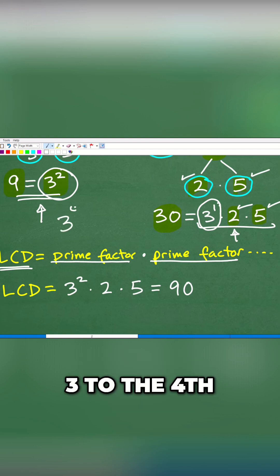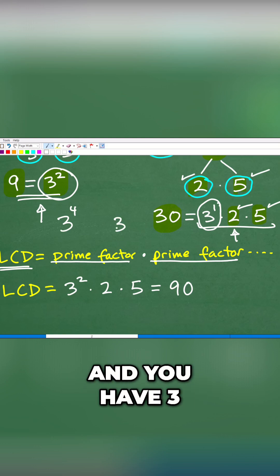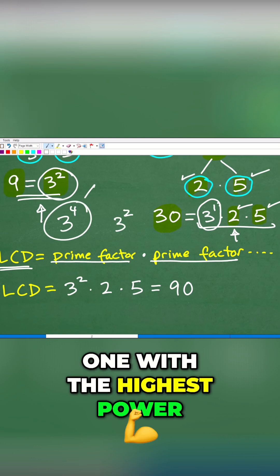So if you have 3 to the 4th, let's say over here, and you have 3 squared here, you always pick the one with the highest power. And we put that in to our product for the LCD.